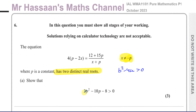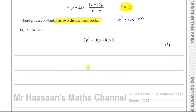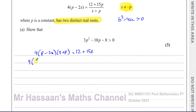The first step is to rearrange the equation. Multiply both sides by (x plus p), so we have 4 times (p minus 2x) times (x plus p) equals 12 plus 15p. Expanding the bracket: p times x is px, p times p is p², minus 2x times x is minus 2x², and minus 2x times p is minus 2px. The right side remains 12 plus 15p.